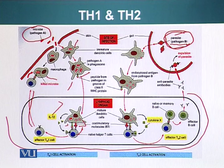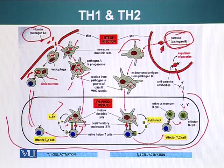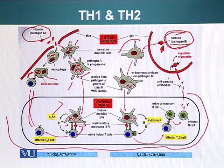The second route: our parasitic pathogen B was encountered by an immature dendritic cell. It did the same thing — it engulfed it by endocytosis, fused it with the phagosome, and the phagosome was fused with the lysosome, degrading the pathogen. Little fragments of pathogen B proteins were displayed on the surface of this antigen presenting cell.